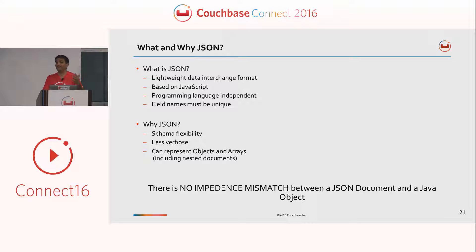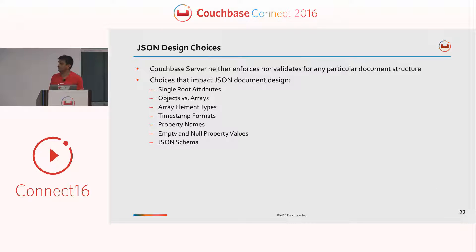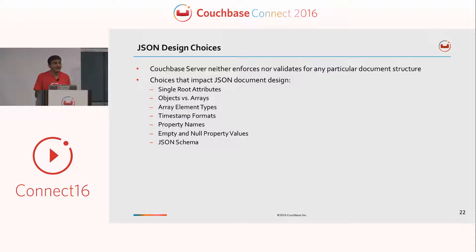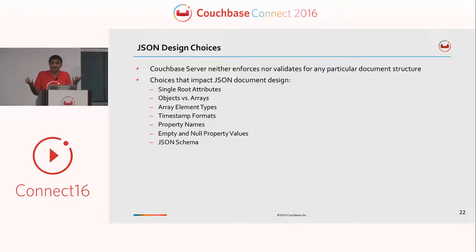Coming to data modeling, what are the various design choices when data modeling JSON documents? I'll divide this into two parts: the JSON document body itself, and the key, because Couchbase is a key-value store. The various design choices include: single root element versus a type attribute embedded, the choice between objects or arrays, how to deal with array elements, timestamp formats, how to handle property names, and how to handle empty, missing, and null attributes. JSON can have elements that are empty, and JSON documents need not have the same elements — two different JSON documents can have different elements. That's the schema flexibility we get.